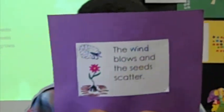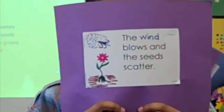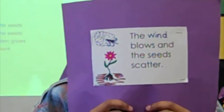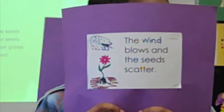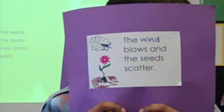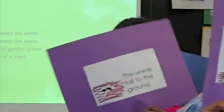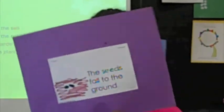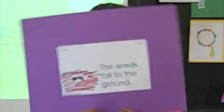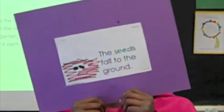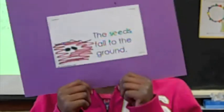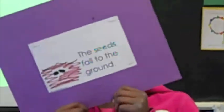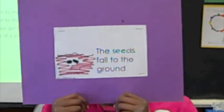The wind scatters the seeds, the wind scatters the seeds. This is how our garden grows, the life cycle of a plant. The seed falls in soil, the seed falls in soil. This is how our garden grows, the life cycle of a plant.